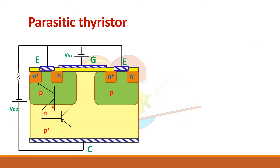Similar to the parasitic transistor in a MOSFET (usually represented by an anti-parallel diode), in an IGBT you have two transistors — one NPN and one PNP. This structure where two transistors are connected back to back is actually a thyristor, as studied in the SCR two-transistor model. The problem with a thyristor is that if it goes into a latching state, it cannot be turned off. In the design of IGBT, care is taken to ensure this thyristor does not enter the latching state.